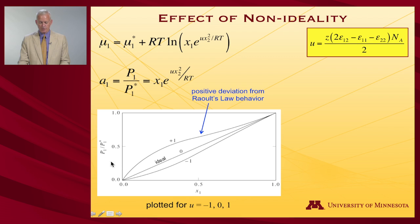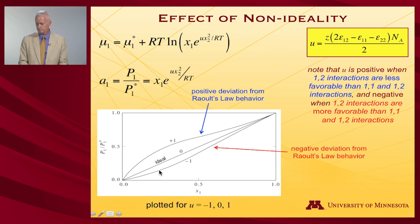Positive deviation from Raoult's Law behavior, that's where the vapor pressure is greater than expected compared to Raoult's Law. That implies a positive u. And looking at how u is defined, that means that the energy of interaction between unlike partners is not as good as it is between like partners. And that's what we expect. Negative deviation, exactly the opposite. We're going to see the vapor pressure drop below the ideal line. And looking back at how u is defined, it's because we have better interactions between unlike partners. So u is positive when 1-2 interactions are less favorable, and negative when 1-2 interactions are more favorable.